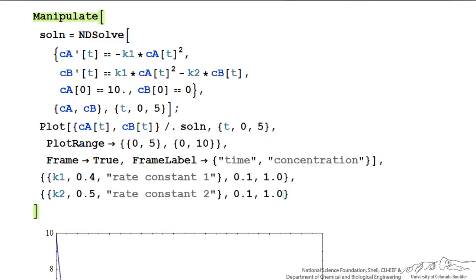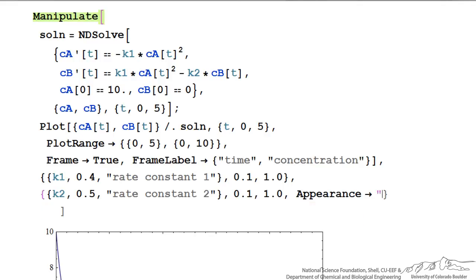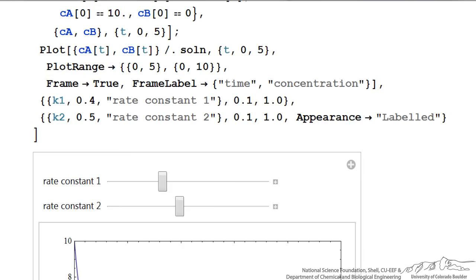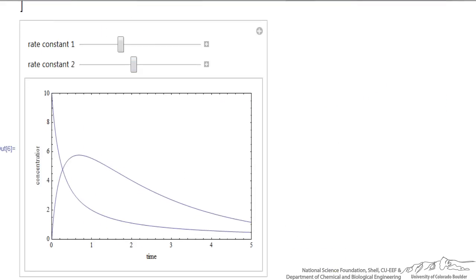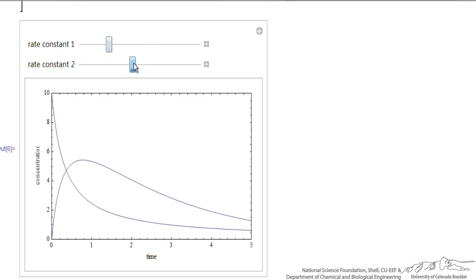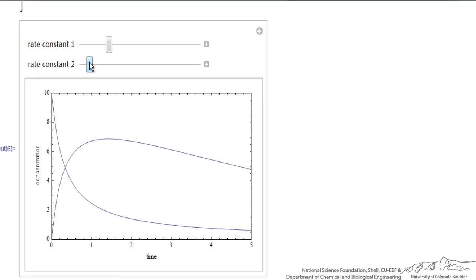I'm going to add one more option just for k2 so you can see the difference: the command Appearance with a right arrow and the value 'Labeled' in quotes. We'll see how that's different and what it does in the program. After saving and hitting Shift-Enter, it runs successfully. Now I have the same plot as before, but I can change the value of rate constant 1 and see both curves changing, or I can change the value of rate constant 2 and likewise see how the functions change.